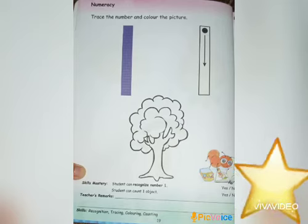Can you see there is an object on the page? Can you recognize it? What is this? This is a tree. How many trees are there? Good. There is only one tree. So you will trace first and then you are going to color the tree.